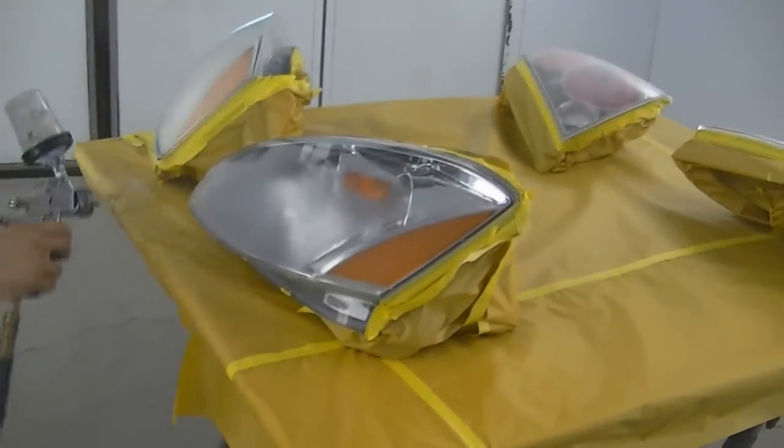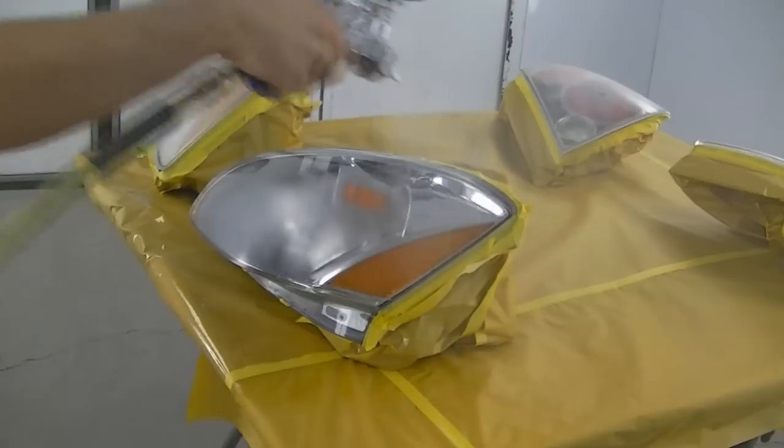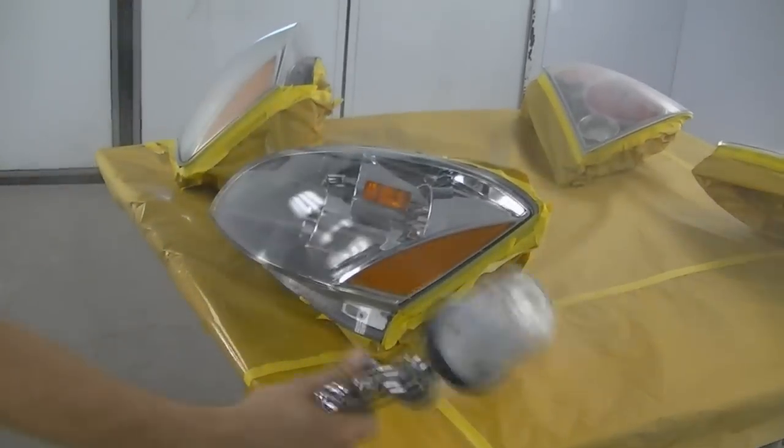After masking off the parts of the light we don't want to get any paint on, I'm going to apply a plastic primer. This is BASF RM865.